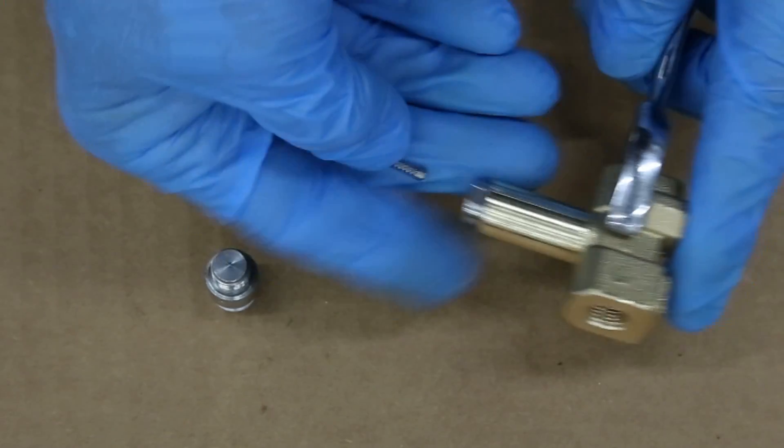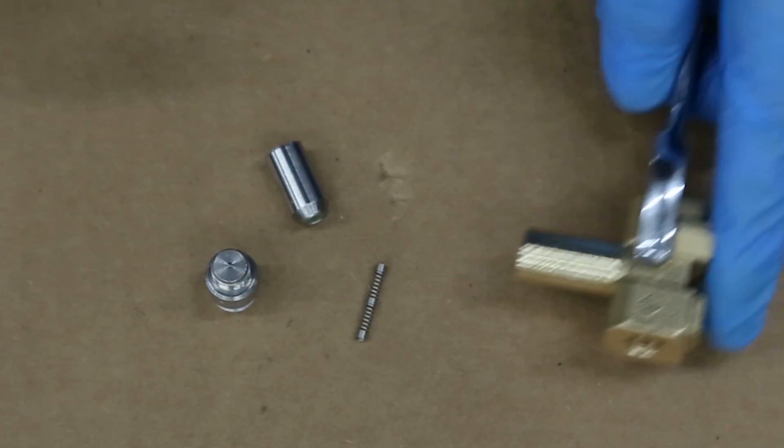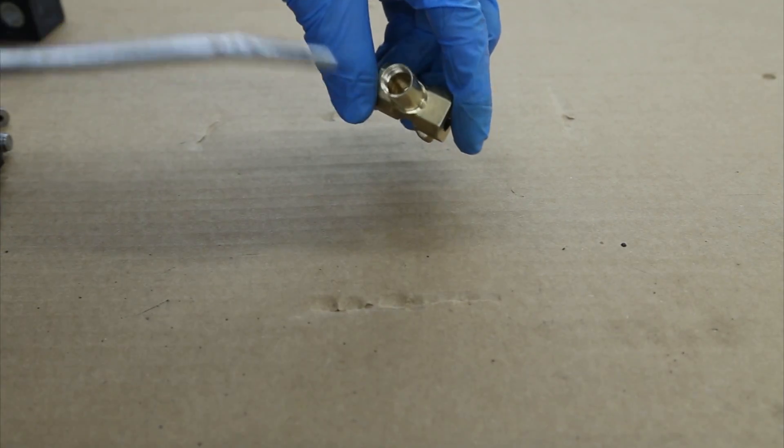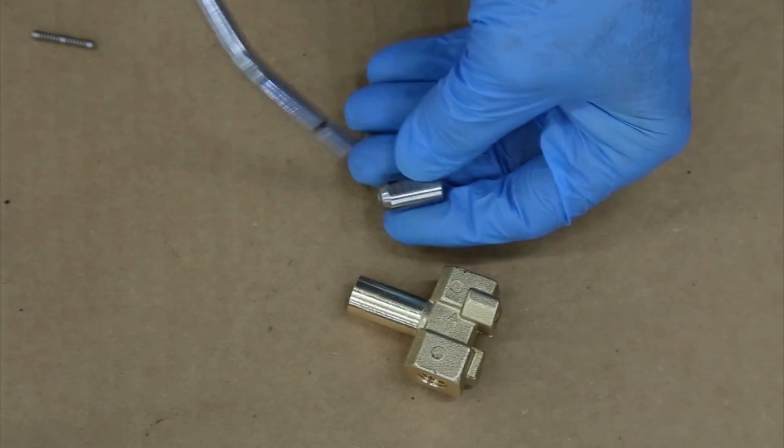Remove the plug nut, the spring, and the plunger from the body. Use compressed air to blow out the body and to clear away any debris from the internal parts.